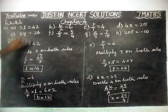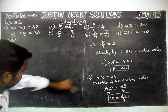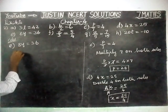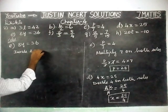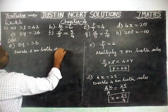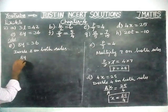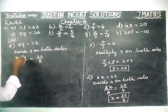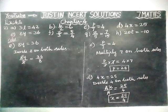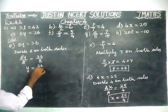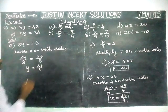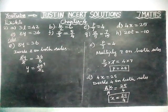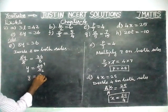Now we are going to solve part E. 8y is equal to 36. Here, the number is in the multiplication, so we have to divide. Divide 8 on both sides. 8y divided by 8 is equal to 36 divided by 8. The 8s get cancelled. We cannot divide 36 by 8 without a remainder, so we keep it as is: Y equals 36 divided by 8. We can simplify by 4: 9 fours are 36, 2 fours are 8, so Y is equal to 9 divided by 2.